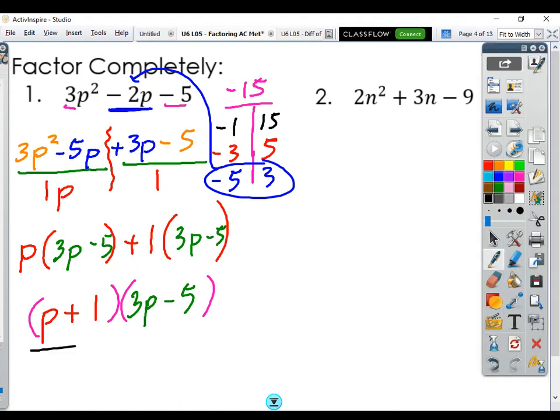There's our factored form using the AC method. So you'll see I still did all six steps, but you can start speeding it up a little bit and start moving it along. So I want you to try one on your own now. This is the point where I want you to give one a decent effort. Try number 2, and then come back and see if you got the same answer as me. Press pause and give it a shot.